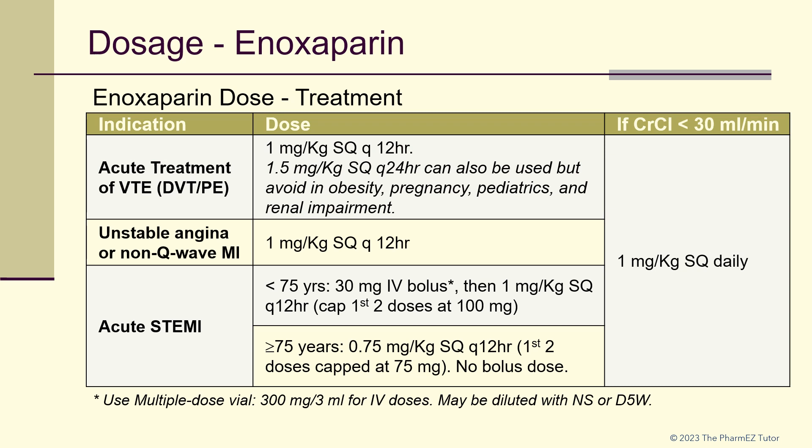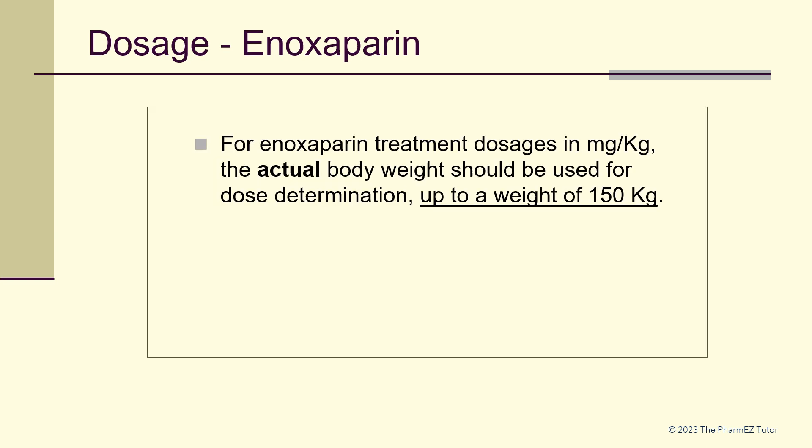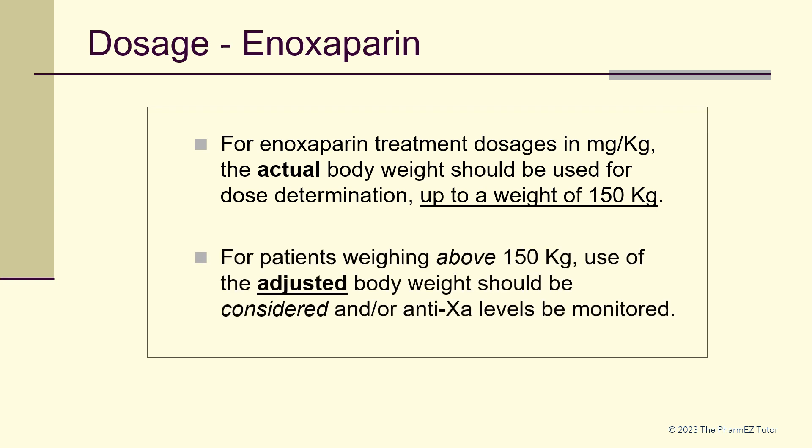In renal insufficiency — creatinine clearance less than 30 mL per minute — doses for all treatment indications need to be reduced to 1 mg per kg subcutaneously daily. For enoxaparin treatment dosages in mg per kg, actual body weight should be used for dose determination up to a weight of 150 kg. For patients weighing above 150 kg, use of adjusted body weight should be considered and/or anti-Xa levels should be monitored.